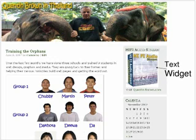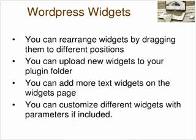You can add more text widgets by going down the page a little bit and you'll see a drop-down box next to text widgets — you can add as many as you like. The beautiful thing about widgets is you can rearrange them by dragging them to different positions, and you can now control how your sidebar looks.